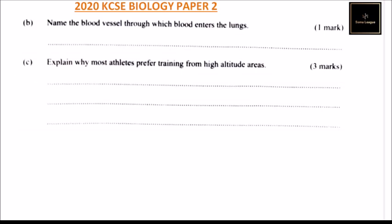Part B: we are told to name the blood vessel through which blood enters the lungs. The vessel is known as the pulmonary artery. That is the vessel which brings blood into the lungs.